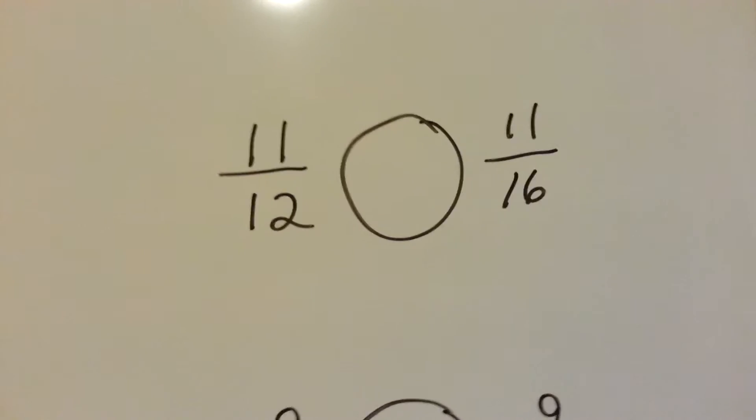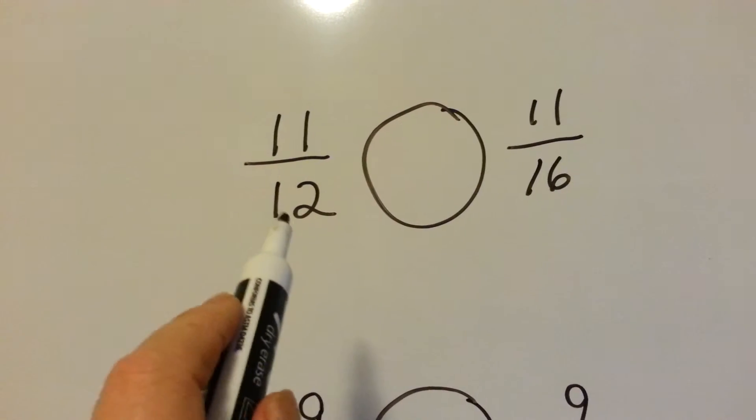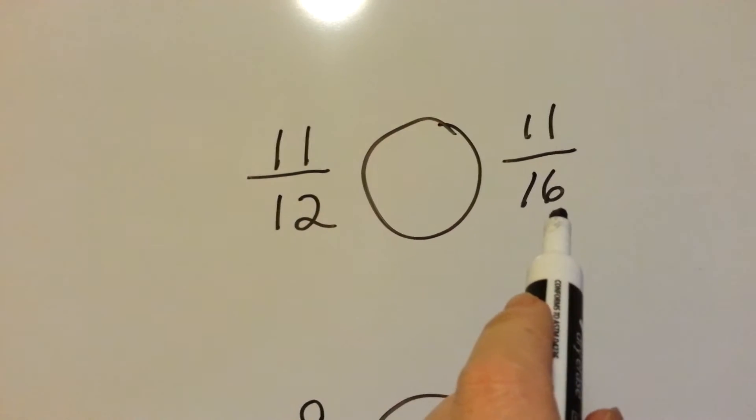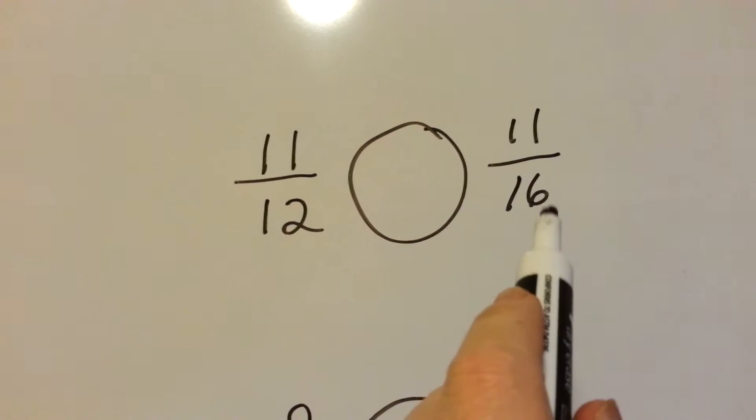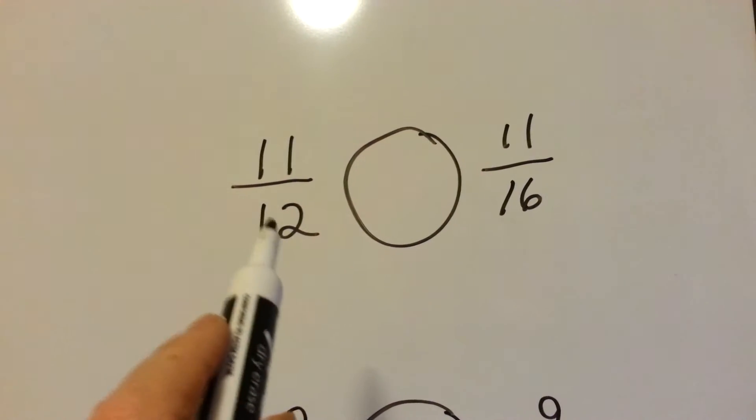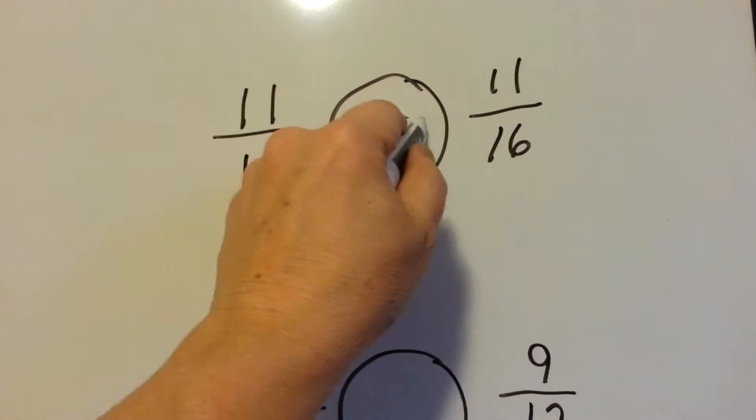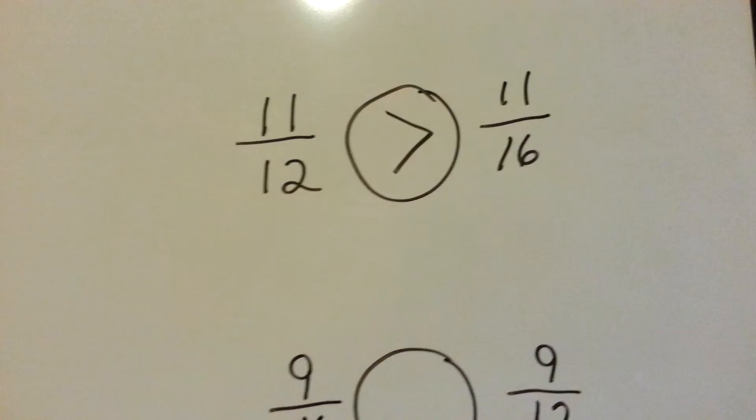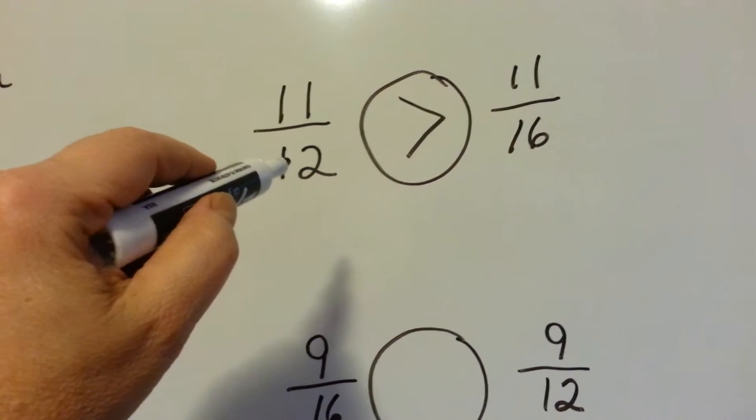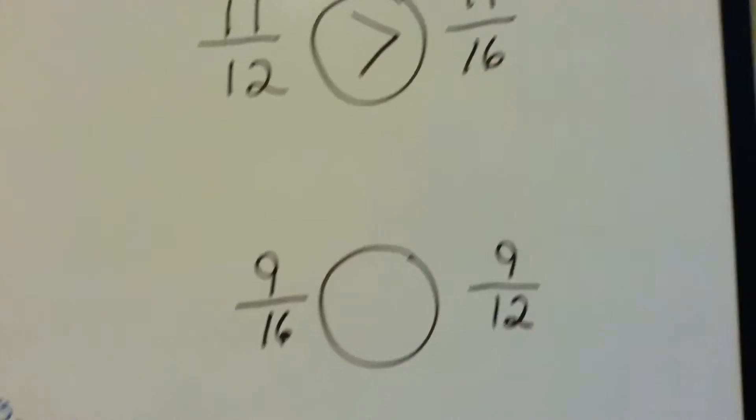Let's try this one. 11 twelfths or 11 sixteenths? Well, this one's cut into littler pieces. This one's bigger pieces. Do you want a candy bar cut into 16 pieces? Or do you want a candy bar cut into 12 pieces? Yeah, these would be bigger. And if they both have 11, we know the one with the smaller denominator is going to be a larger portion. And having 11 pieces out of 12 is a lot more than having 11 pieces out of 16.